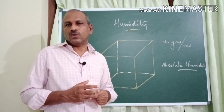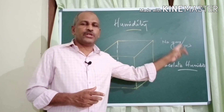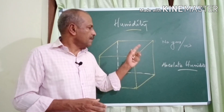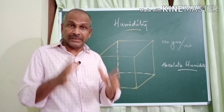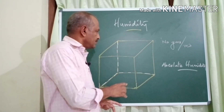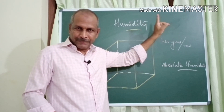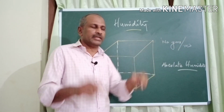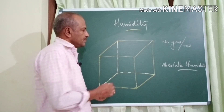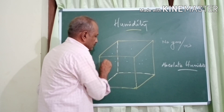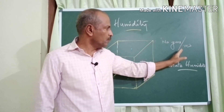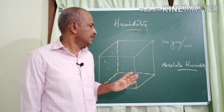The two relative concepts of humidity are absolute humidity and relative humidity. Absolute humidity is the actual amount of water present in the atmosphere. It is measured as the number of grams of water vapor present per cubic meter volume of air. In one cubic meter volume of air, the amount of water vapor it contains — in grams per cubic meter — is called absolute humidity.